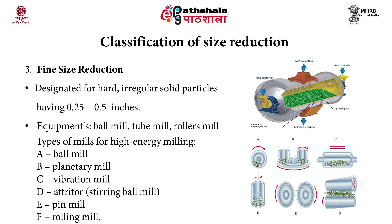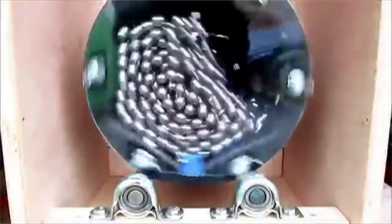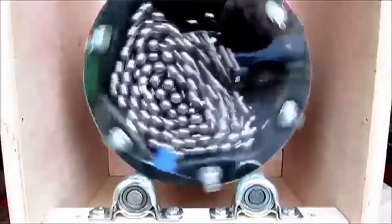The images on the right are designated A through F. A is a ball mill, B is a planetary mill, C is a vibration mill, D is a stirring ball mill, E is a pin mill, and F is a rolling mill. An animated picture shows how particles are shredded in a ball mill.